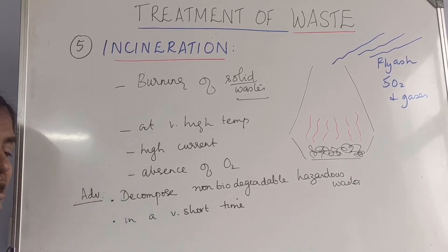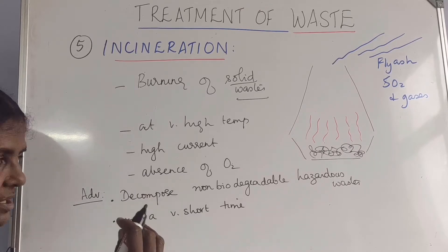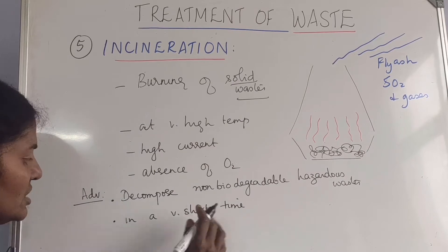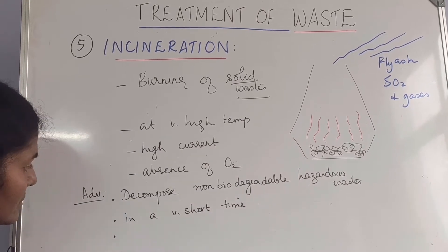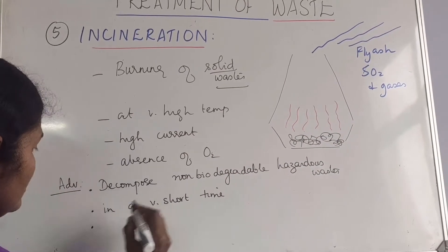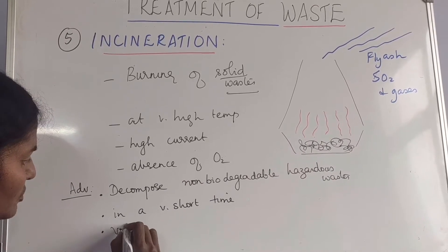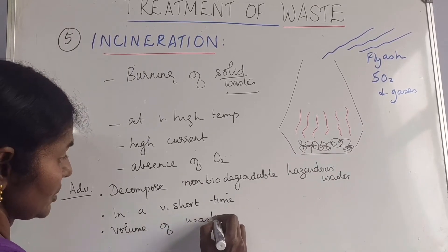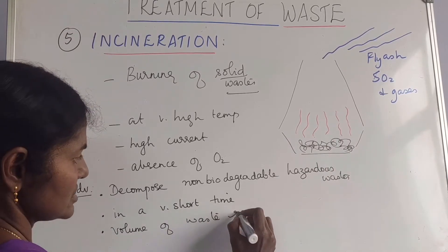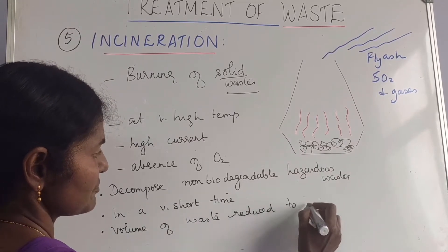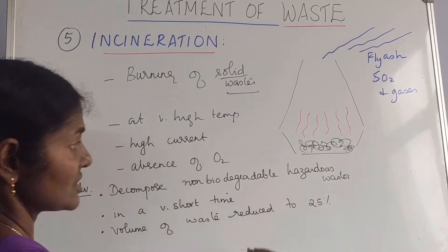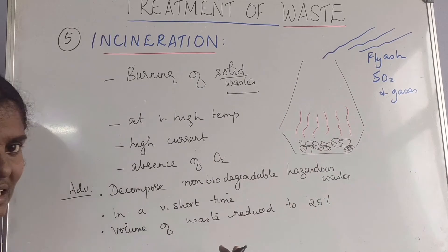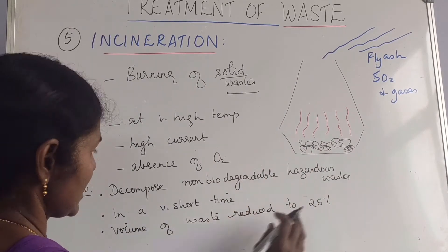If we do it manually, it will take hours together to burn and a lot of gases will be going out. But here it is done in a very short time. Also, the volume of waste is reduced, or the bulk of waste is reduced to 25% — one-fourth of the waste. So it is reduced to that level.